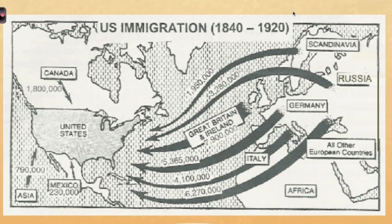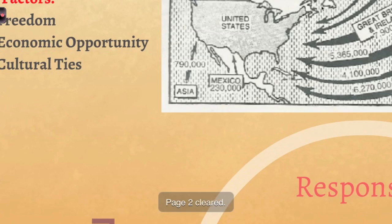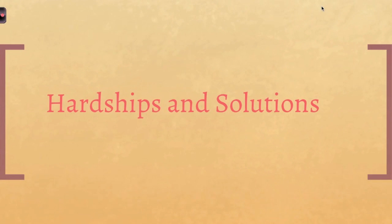Looking at this graph from 1840 to 1920, during the 1840s and 1850s a lot of people from Great Britain, Ireland, and Germany came in. But towards the late 1800s and into the early 1900s, you see a lot of Eastern Europeans, Italians, and Russians arriving. These later groups had a harder time adjusting to moving to America compared to those who came from the British Isles or Germany.